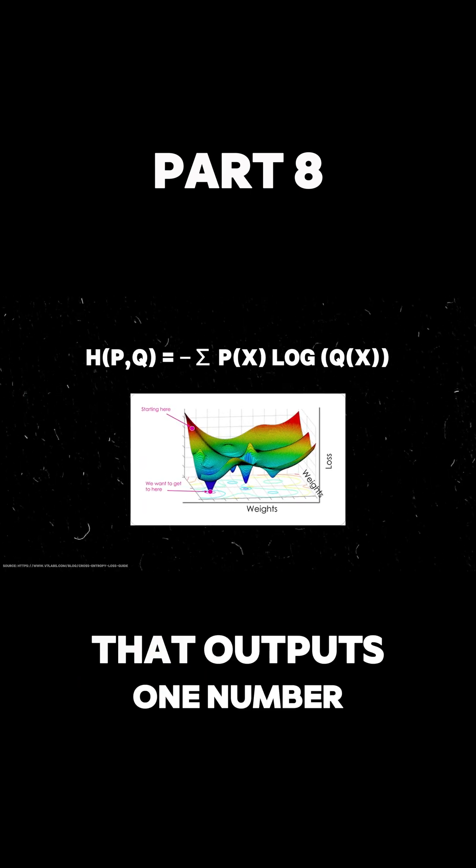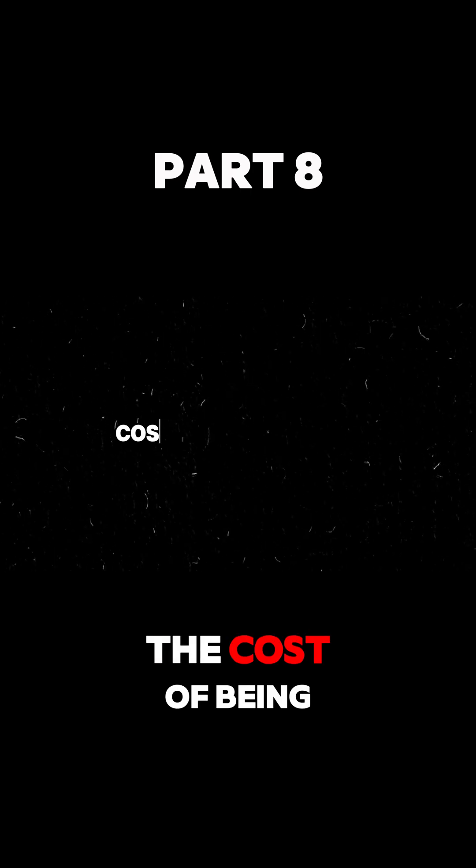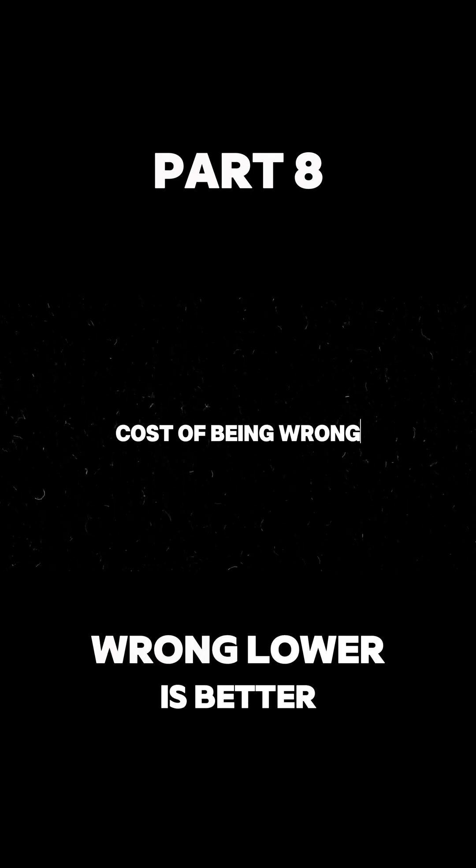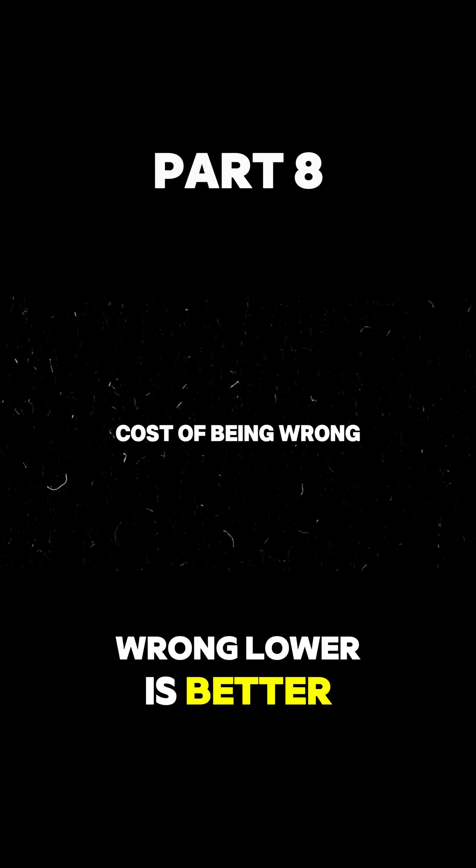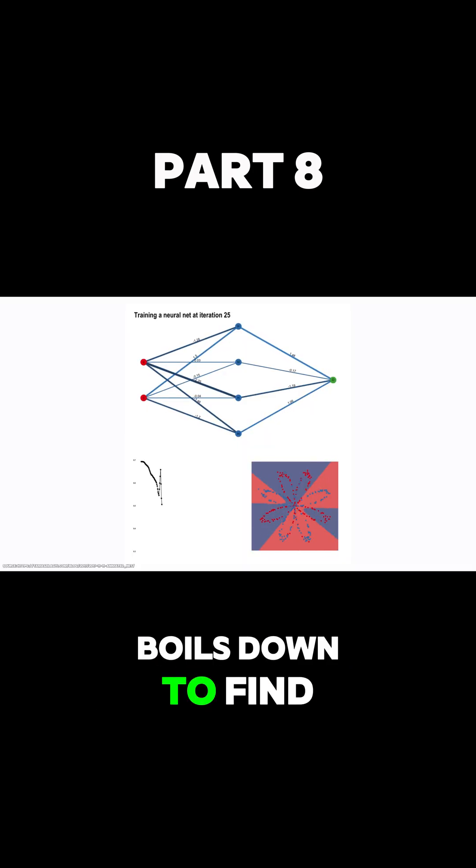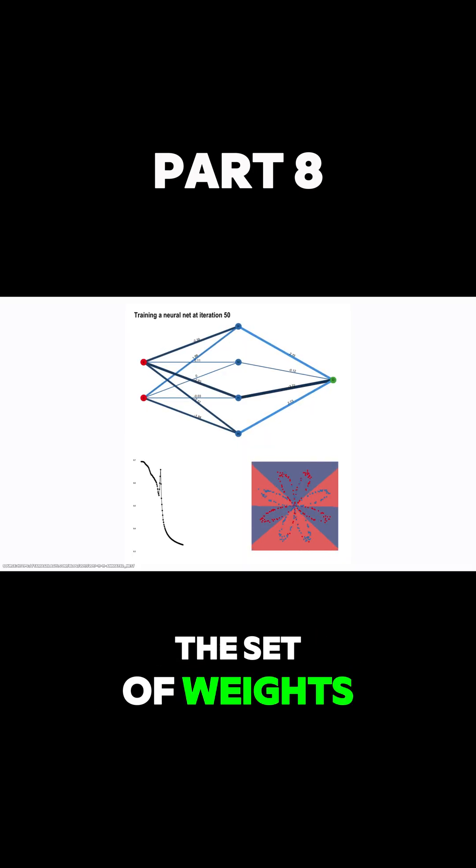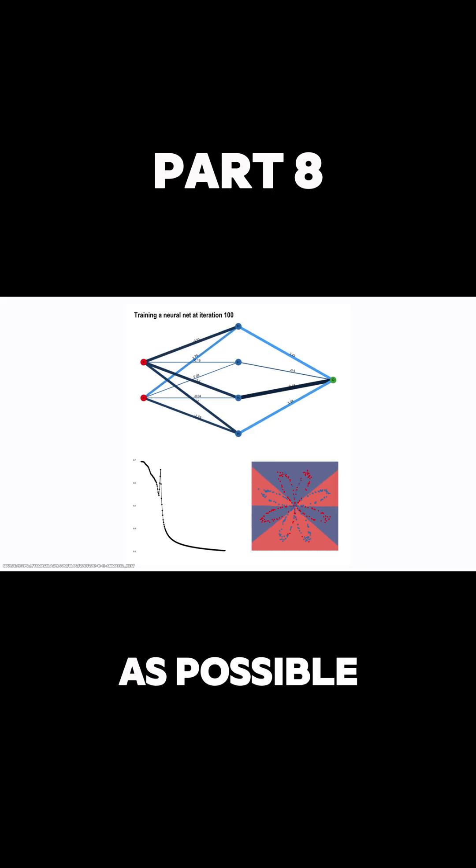It outputs one number: the cost of being wrong. Lower is better. So the learning problem boils down to finding the set of weights and biases that make the loss as small as possible.